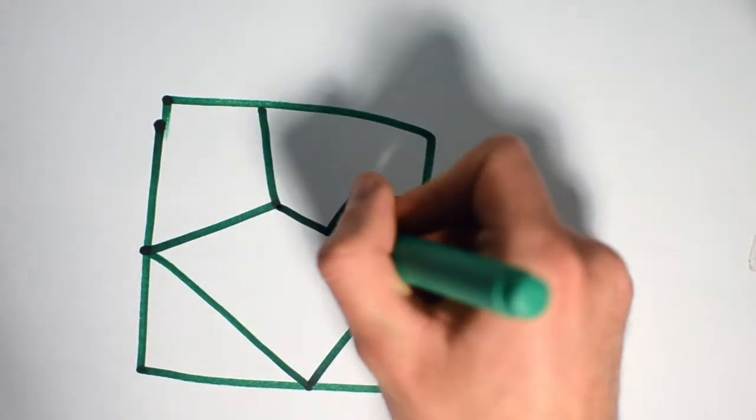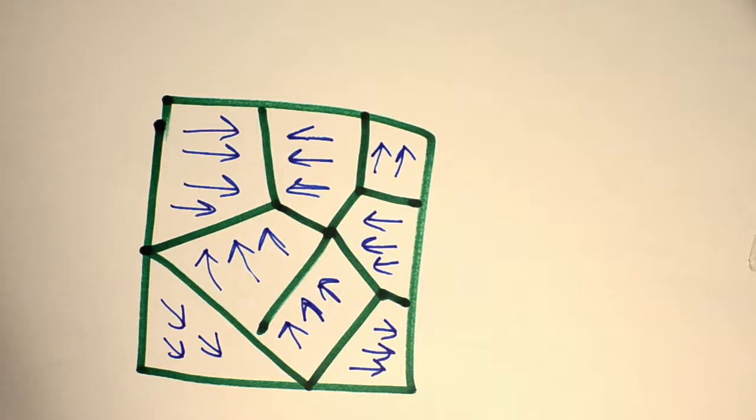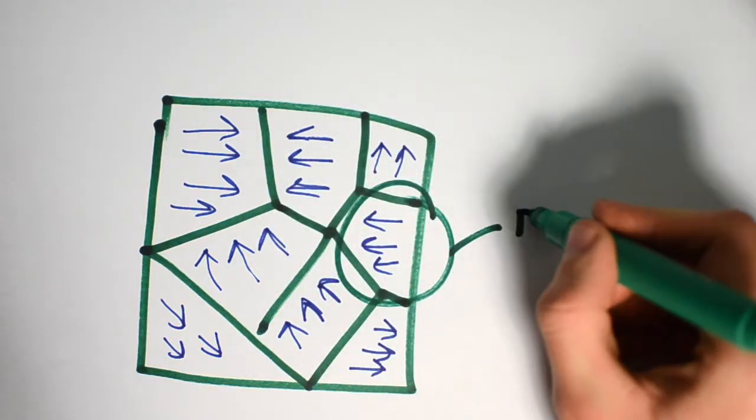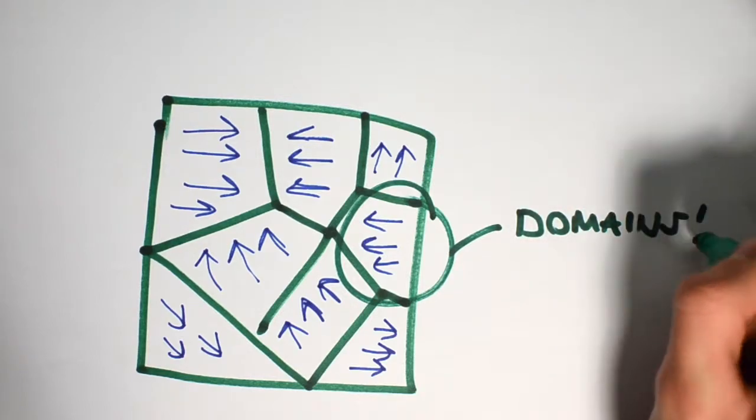Ferromagnetic material is split into domains. Before exposure to a magnetising field, the electron spins within the domains are aligned, and the magnetisation of the different domains cancels out, resulting in no overall magnetisation.